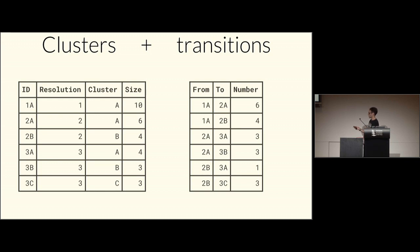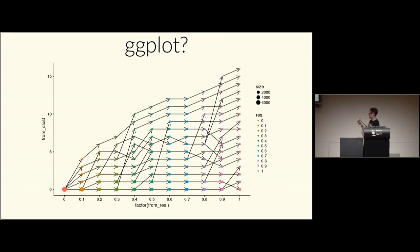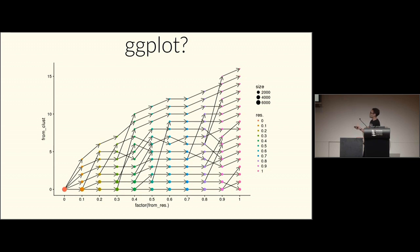With the data ready, I tried plotting it with ggplot. On the x-axis is the clustering resolution parameter, and on the y-axis the cluster ID. The result kind of works but is a mess — lots of arrows crossing the plot. The reason is that the clusters aren't ordered in any meaningful way; they're just sorted by size.